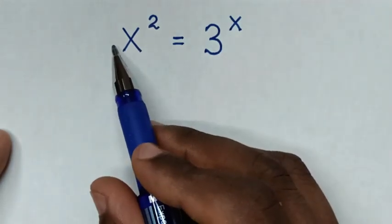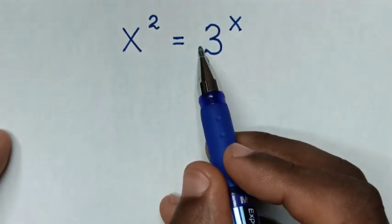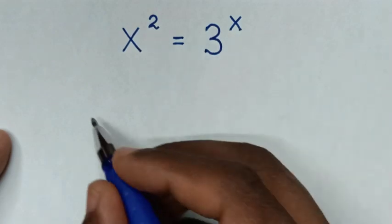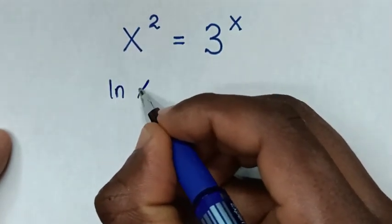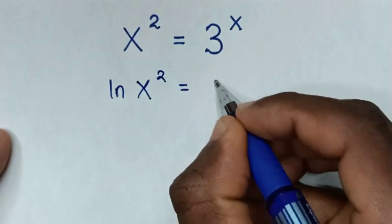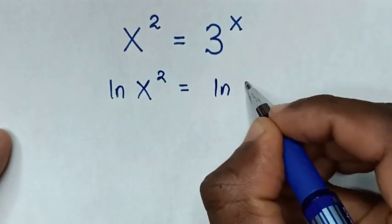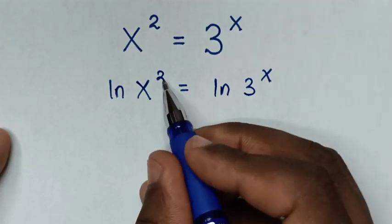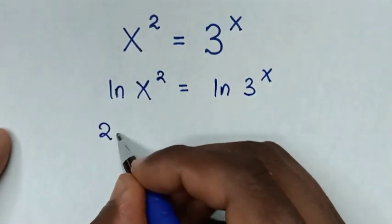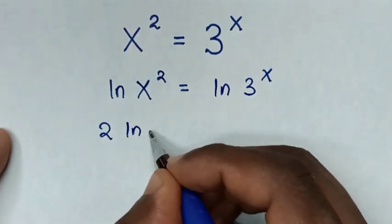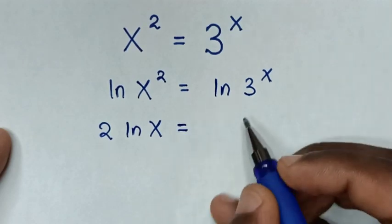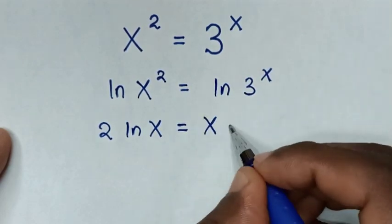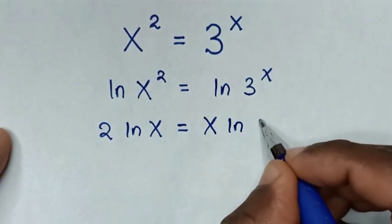First, we will apply ln on both sides so as to move these powers into the base. So it will be ln(x²) is equal to ln(3^x). Then this power of 2 will move to the base, so it will be 2·ln(x) is equal to — and this power of x will move to the base — so it will be x·ln(3).